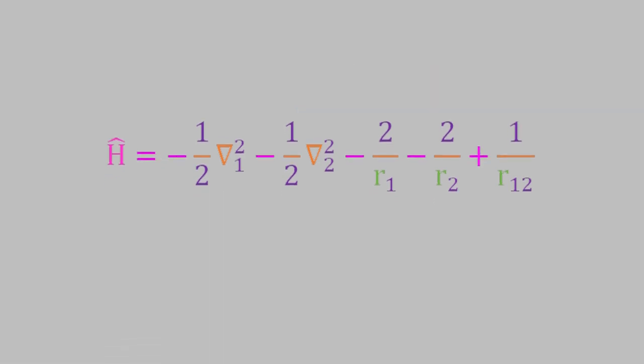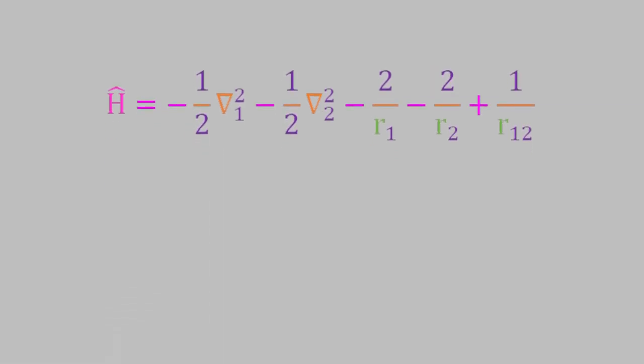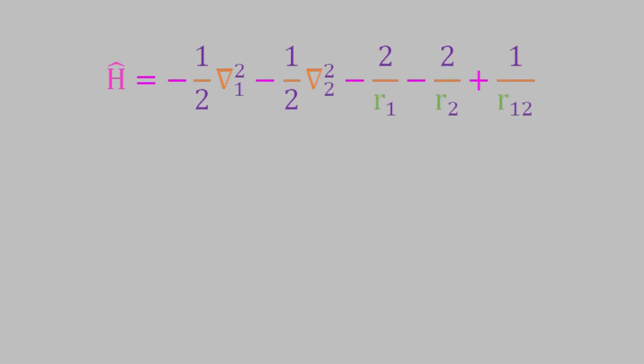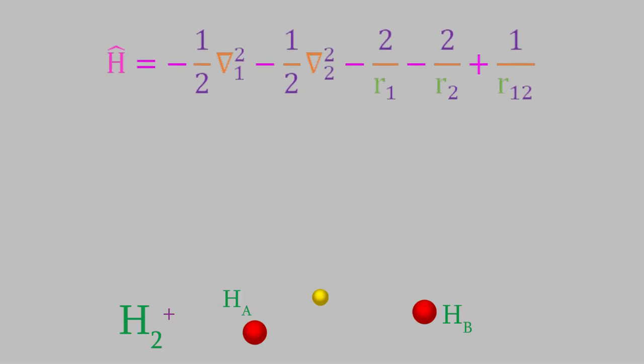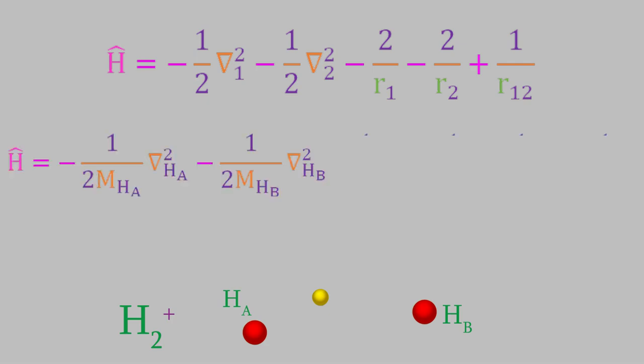For the hydrogen molecular ion, the situation is somewhat different. First, notice that the helium Hamiltonian doesn't have a term for the kinetic energy of the nucleus. That's because we defined the coordinate system so that the nucleus was always at the origin. But now that we have a system with two nuclei, we can't do that anymore. For that reason, we'll have to have kinetic energy terms for the nuclei.